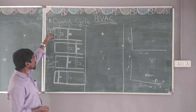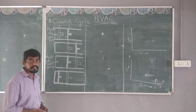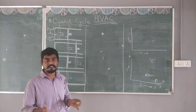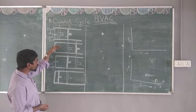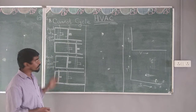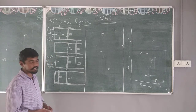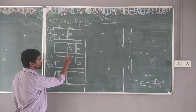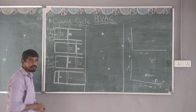This particular cycle I am going to explain using a piston and cylinder arrangement. Four different diagrams are given indicating 4 different processes: process 1 to 2, 2 to 3, 3 to 4, and 4 to 1.